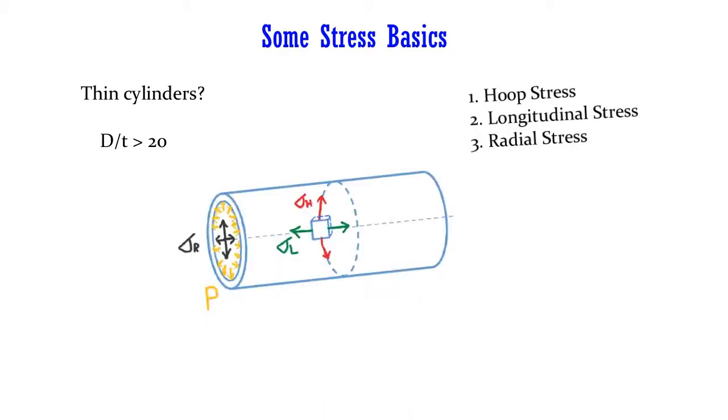So fluid inside the container applies a pressure P on the walls, and as a result, stresses are developed inside the material. Most applications, specifically involving most common piping and pressure vessel codes such as ASME Section 8 Division 1 and B31.3, utilize the assumption of thin cylinders, which implies that D/t, which is diameter upon thickness ratio, is greater than 20.